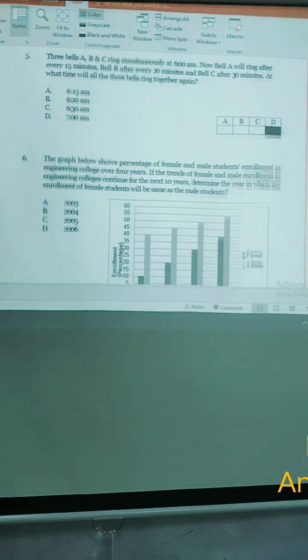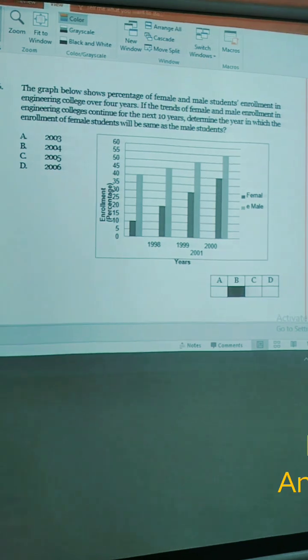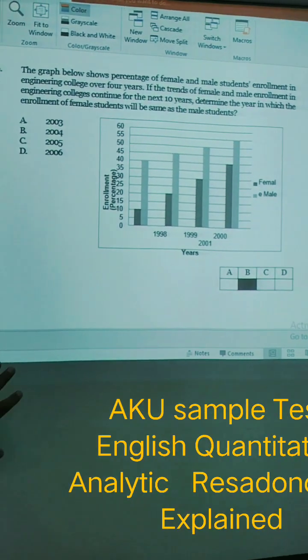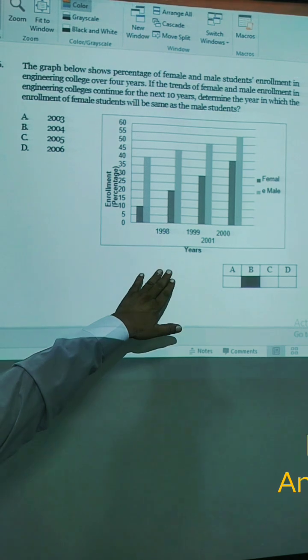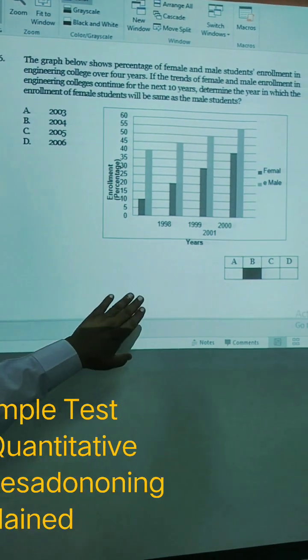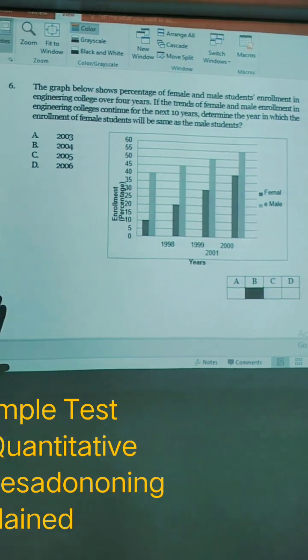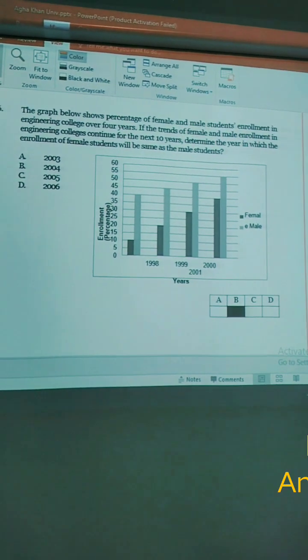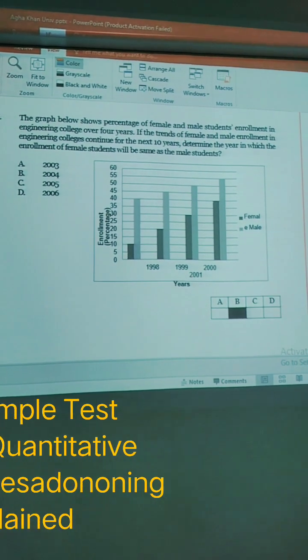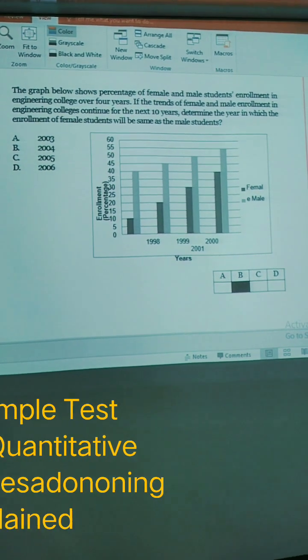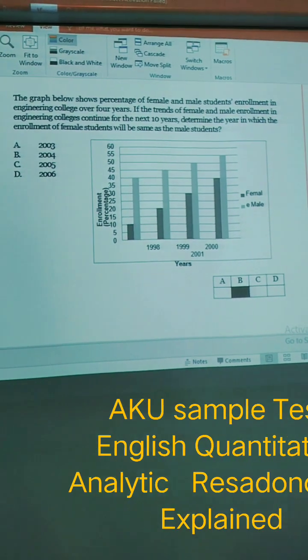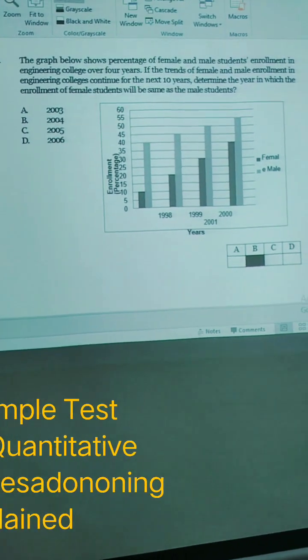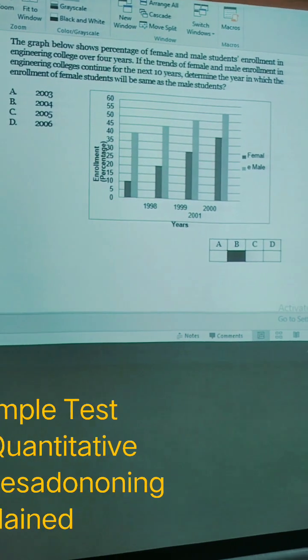The graph below shows percentage of female and male students in an engineering college. In which year are male and female both the same? 98, 94, 2000, 2001. And they have given the option 2003, 4, 5, and 6. So the correct answer is 2004, which is B.